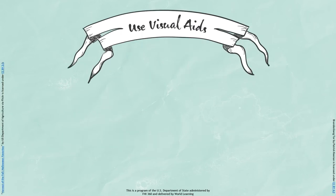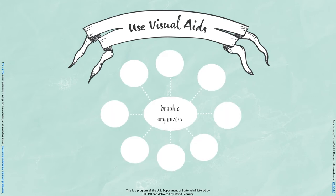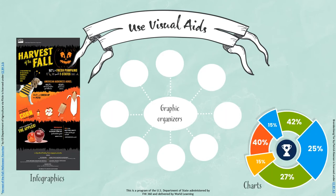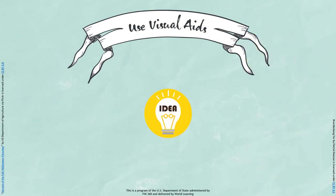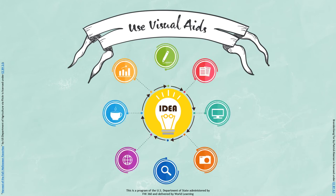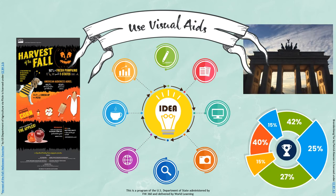Use Visual Aids: Visual aids like graphic organizers, infographics, charts, and pictures can serve as effective and interactive scaffolding tools. These tools help represent ideas and concepts visually, organize information, and show the relation among various concepts. Visually representing ideas by synthesizing several hypotheses can help students use and deal with new and challenging information.